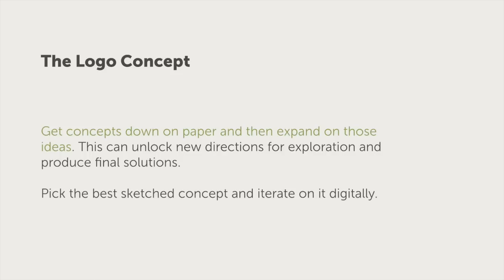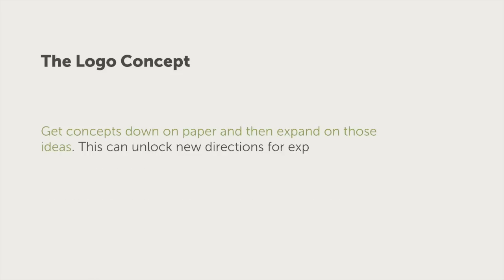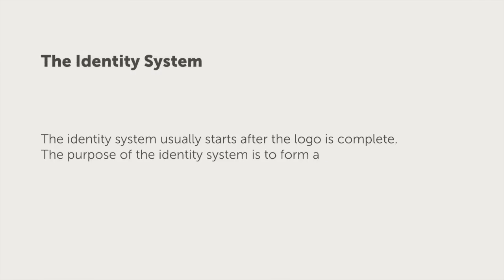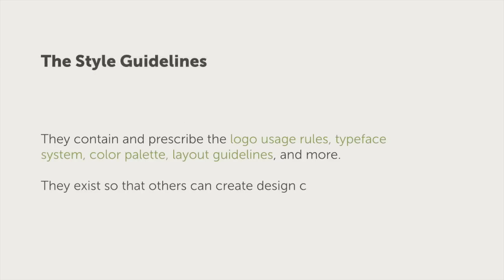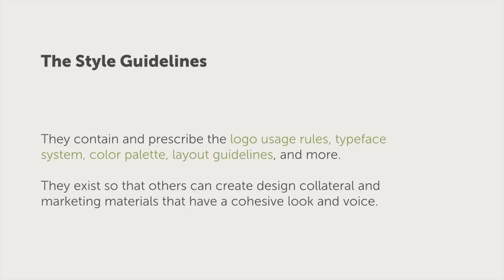Pick the best sketch concept and iterate on it digitally. The identity system usually starts after the logo is complete. The purpose of the identity system is to form a systematic visual language around the logo. The style guidelines contain and prescribe the logo's usage rules, typeface, color palette, layout guidelines, and more. They exist so that others can create design collateral and marketing materials that have a cohesive look and voice.